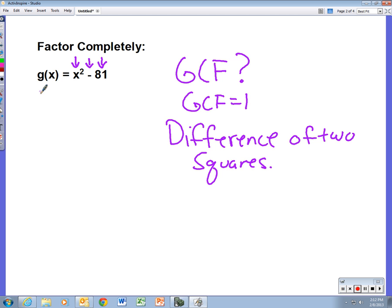If you run into these, you should be able to factor them really quick. Make two sets of parentheses, take the square root of x squared, which is x, put that in each set. Square root of 81 is 9.